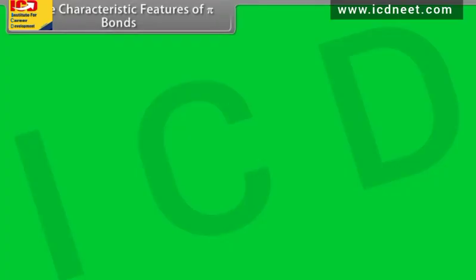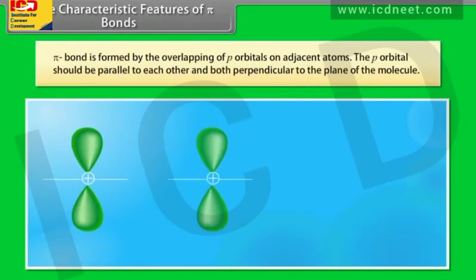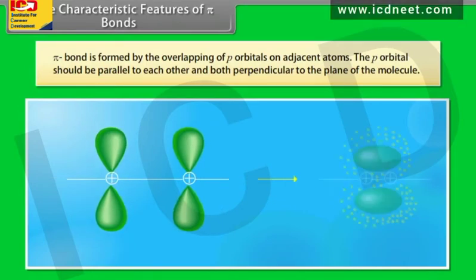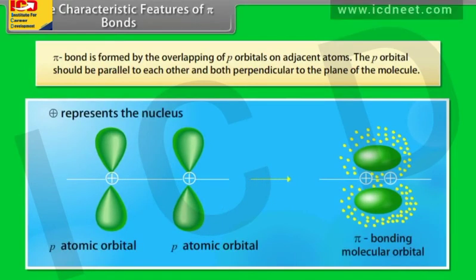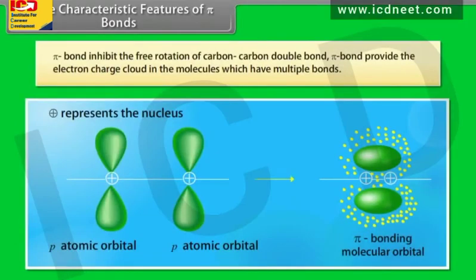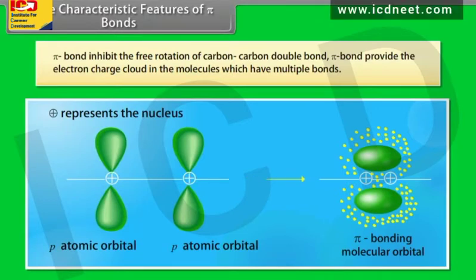Pi bond is formed by the overlapping of p orbitals on adjacent atoms. The p orbitals should be parallel to each other and both perpendicular to the plane of the molecule. Pi bond inhibits the free rotation of carbon-carbon double bonds. Pi bond provides the electron charge cloud in molecules which have multiple bonds.